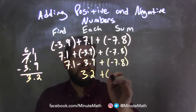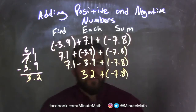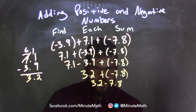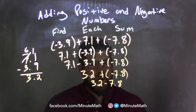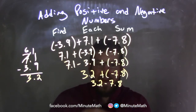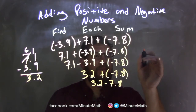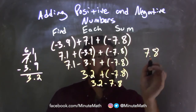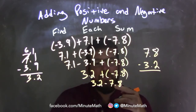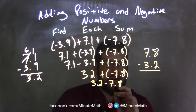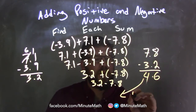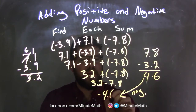Now I have 3.2 plus a negative 7.8, which I can rewrite as 3.2 minus 7.8. Since 7.8 is larger, our final answer is going to be negative. I take 7.8 and subtract 3.2 from it, knowing the result must be negative. 0.8 minus 0.2 is 0.6, and 7 minus 3 is 4. Making it negative, our final answer is negative 4.6.